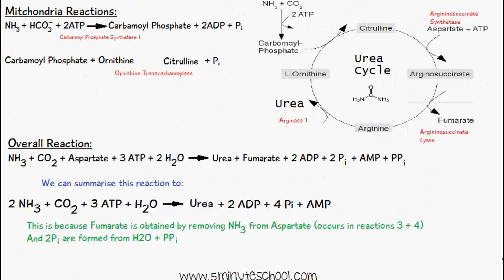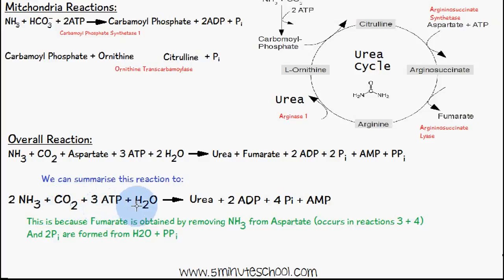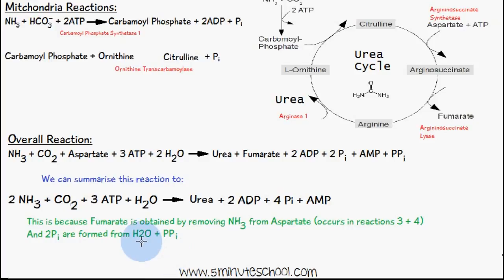The overall reaction can be summarized as: ammonia plus carbon dioxide (providing the carbonate), aspartate, and 3 ATP, plus 2 H₂O gives urea, fumarate, 2 ADP, 2 inorganic phosphates, 1 AMP, and 1 pyrophosphate. This simplifies to: 2 ammonia, 1 CO₂, 3 ATP, and H₂O giving urea, 2 ADP, 4 inorganic phosphates, and 1 AMP. This holds because fumarate is obtained by removing ammonia from aspartate, and the two inorganic phosphates form from the addition of water to pyrophosphate. That covers everything on the urea cycle — thank you for watching.